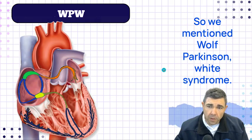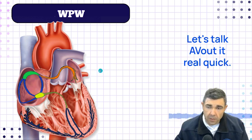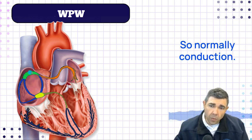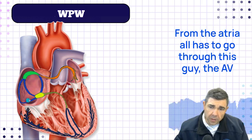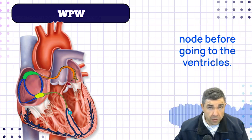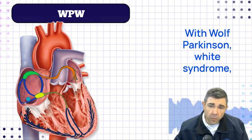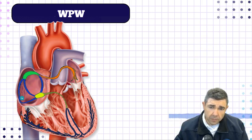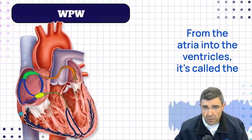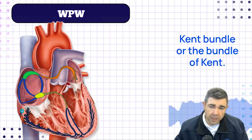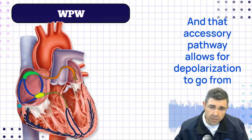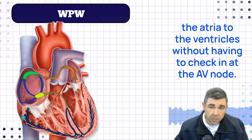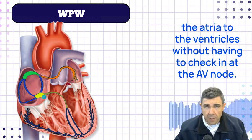With Wolf-Parkinson-White syndrome, normally conduction from the atria all has to go through the AV node before going to the ventricles. With WPW, you get a bypass or an accessory pathway, and that accessory pathway allows for depolarization to go from the atria to the ventricles without having to check in at the AV node.